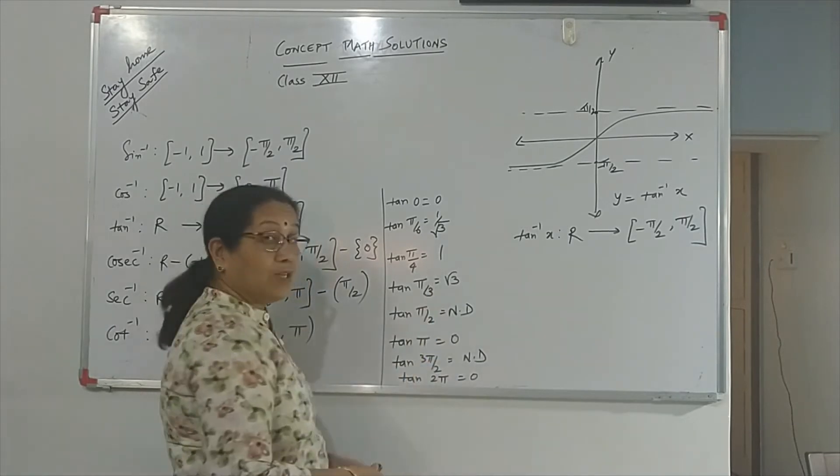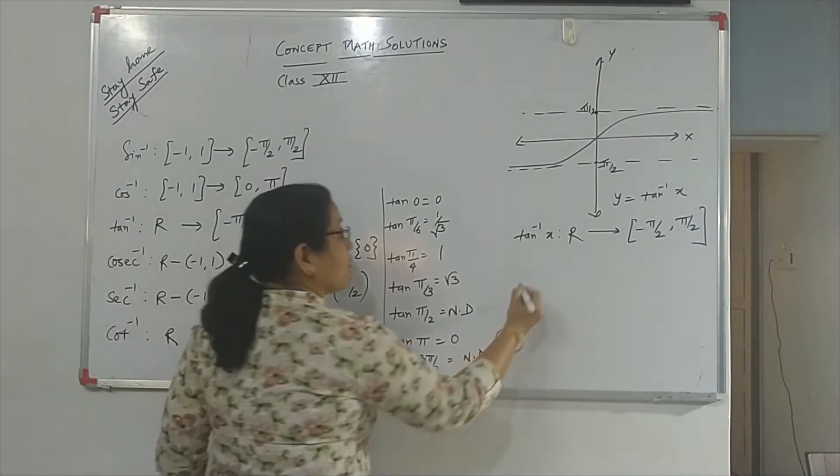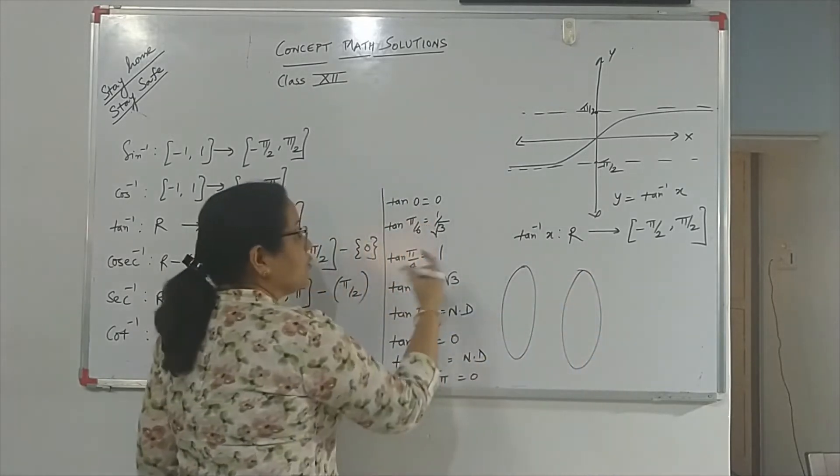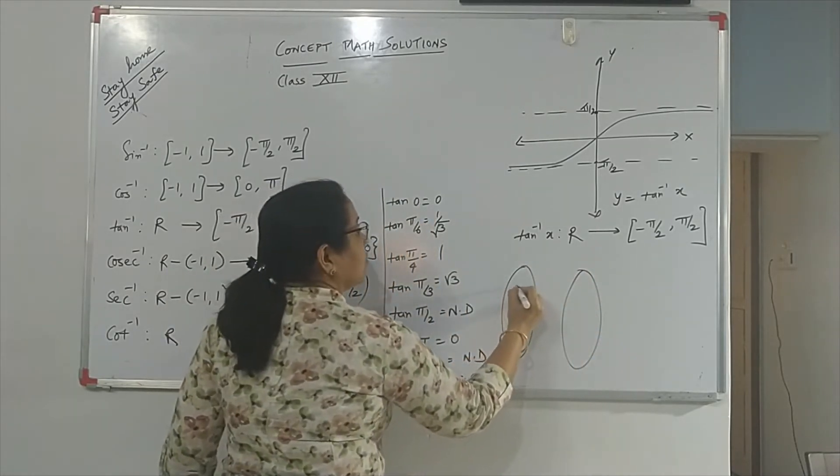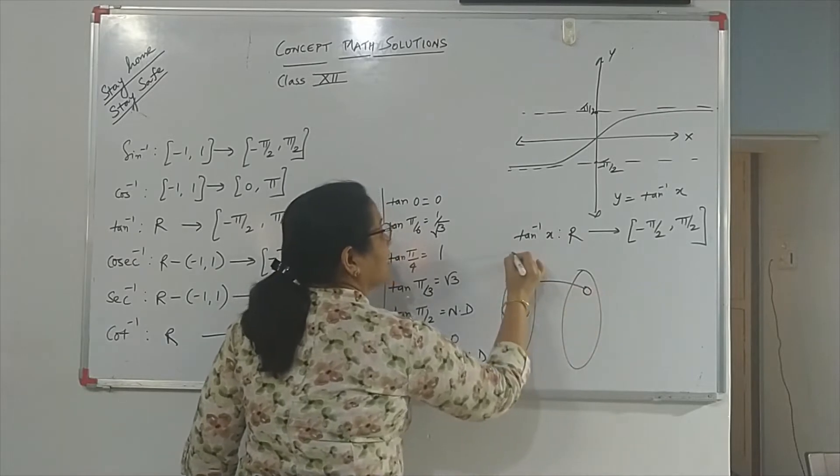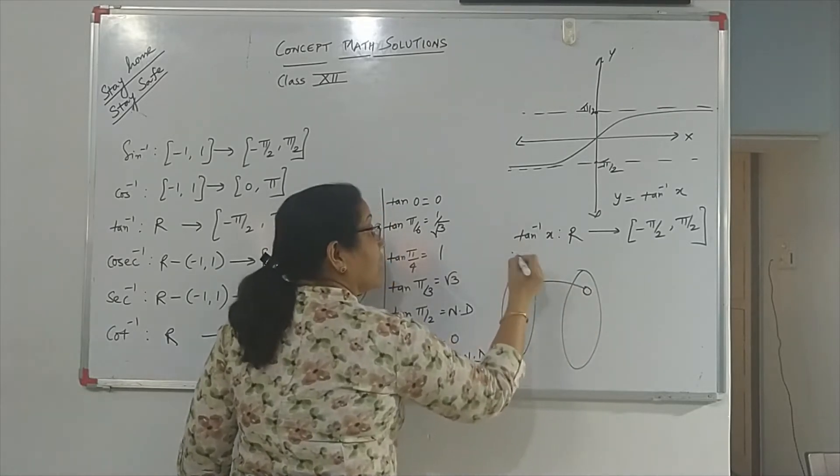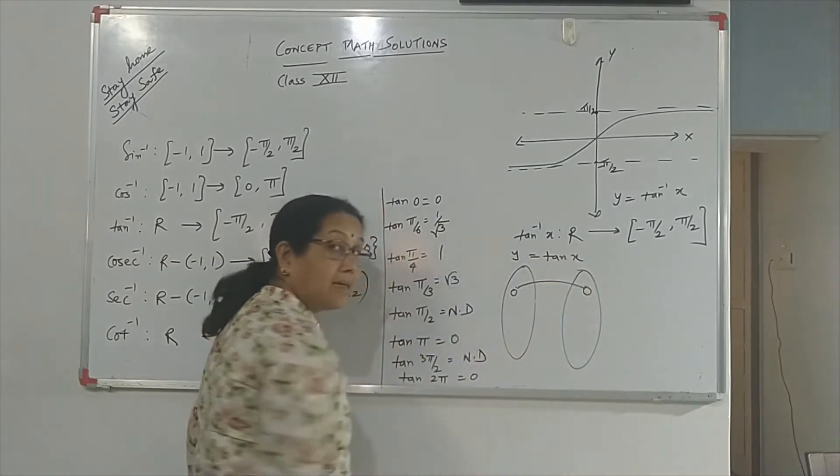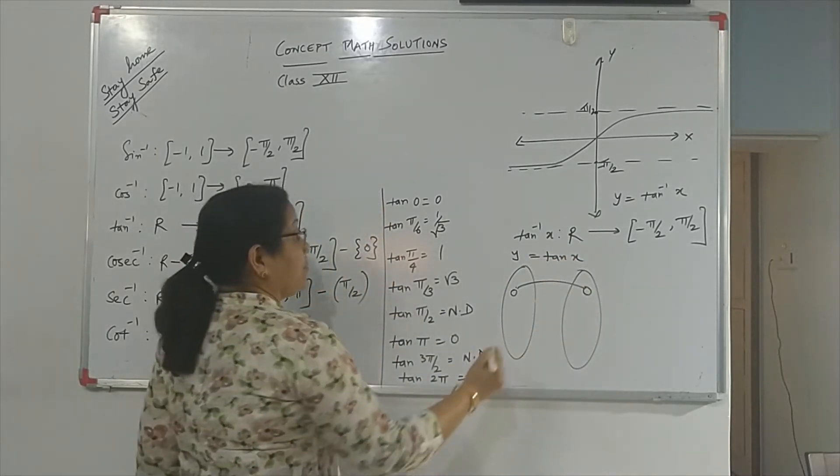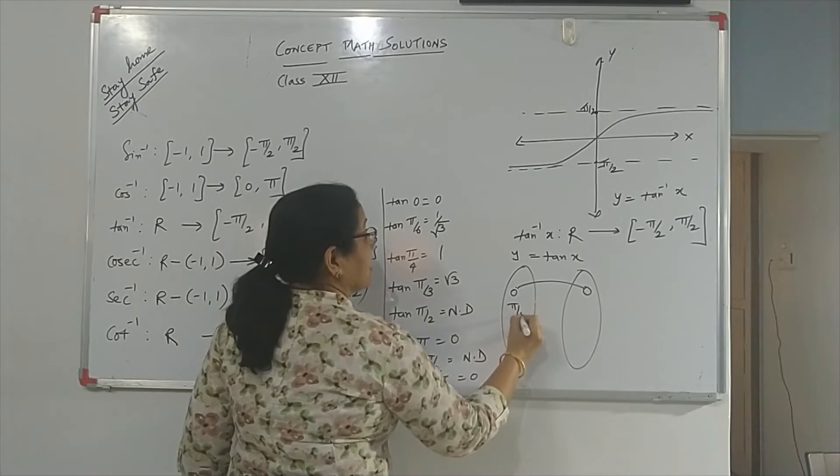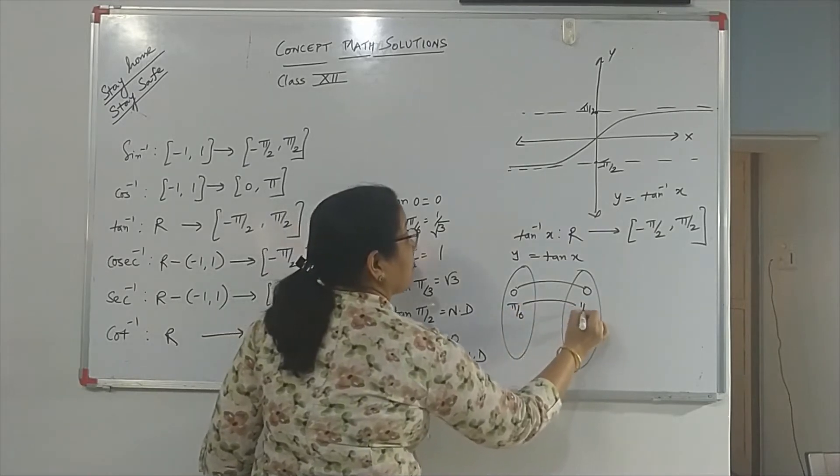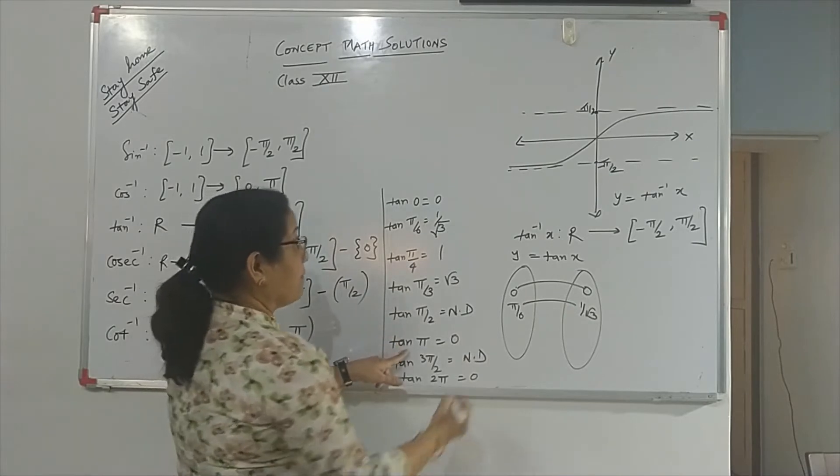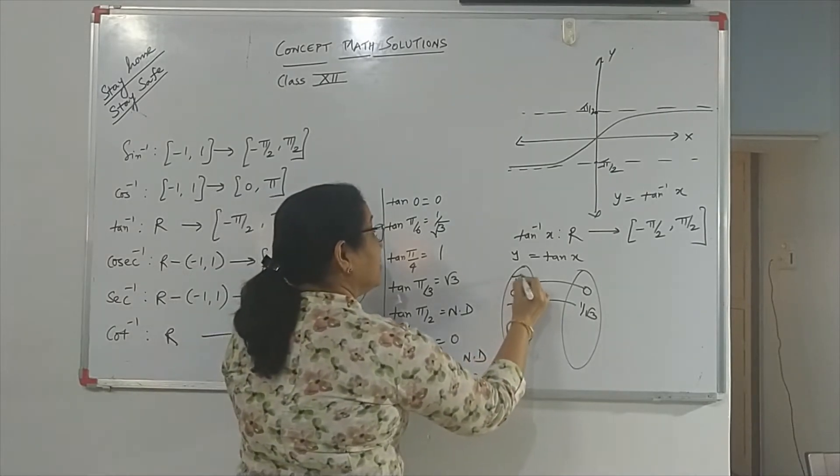Now, tan π by 4 is 1. If I draw an arrow diagram for the tan function, you will find tan 0 is 0. This is an arrow diagram for y = tan x. Tan π by 6 is 1 by root 3. You see tan π is again 0.